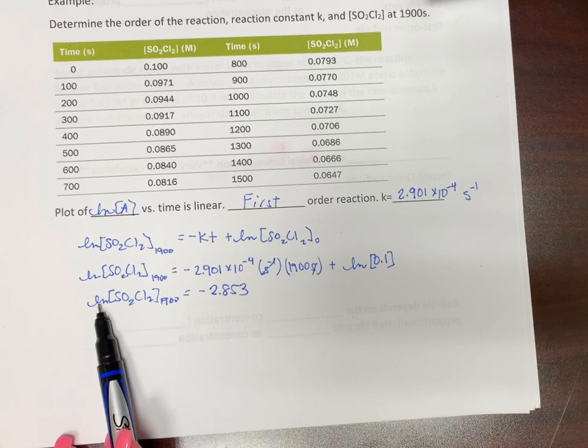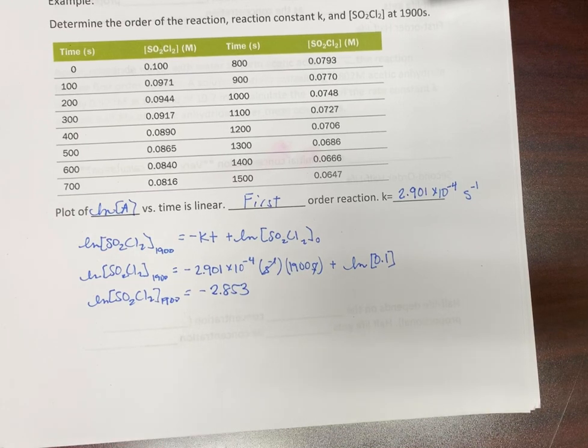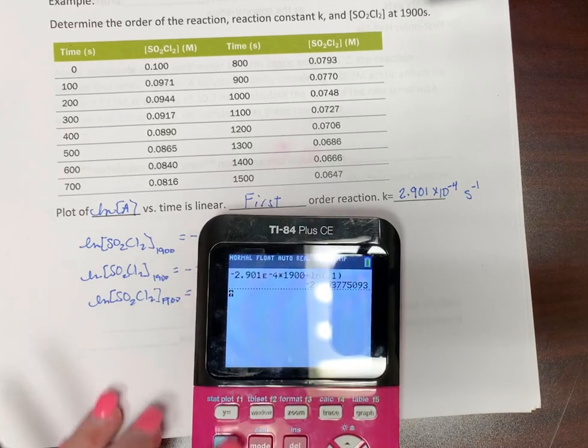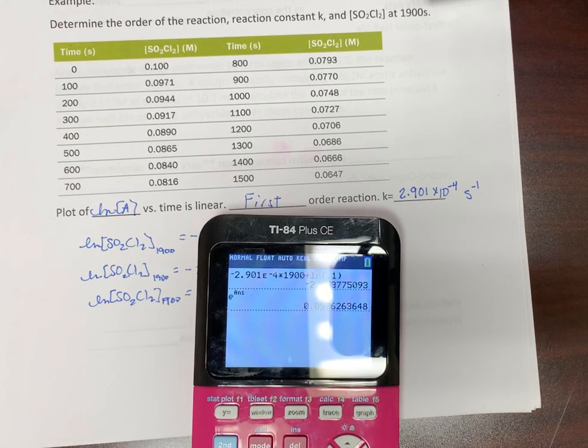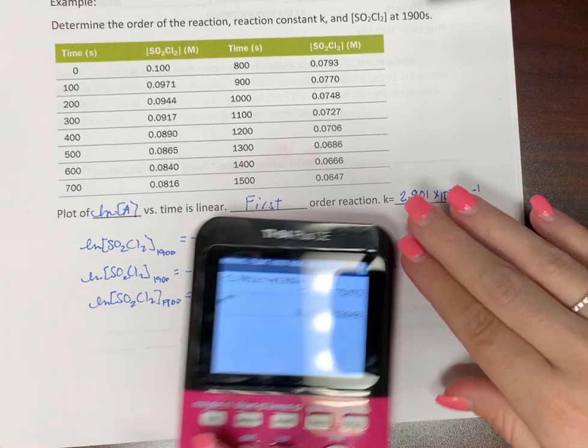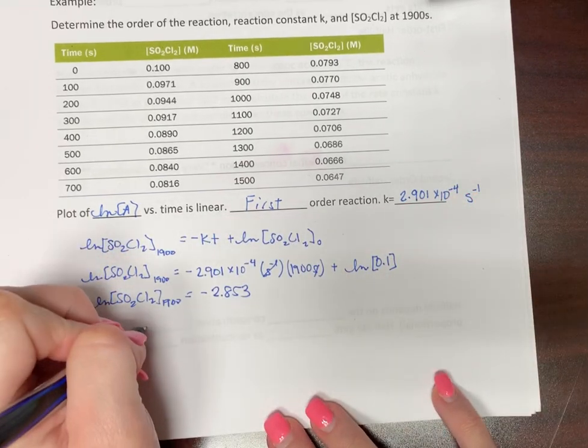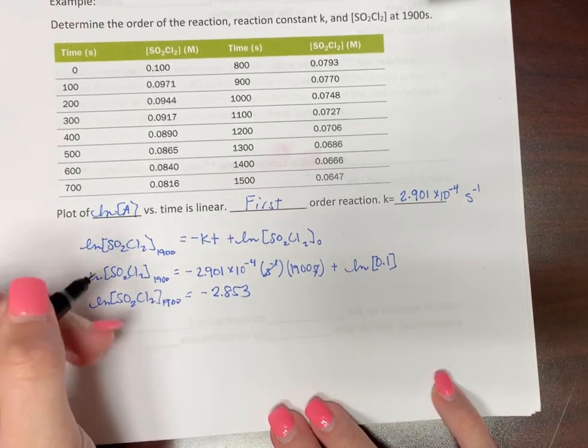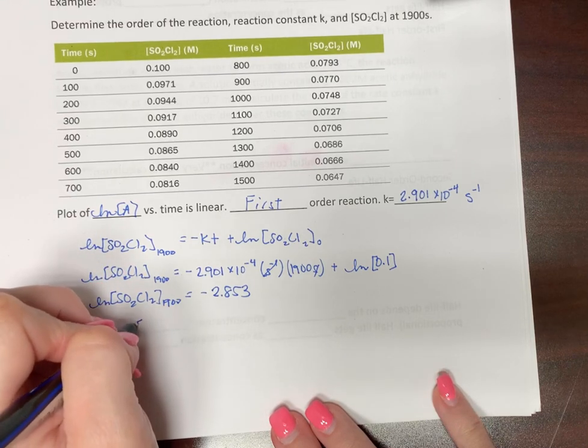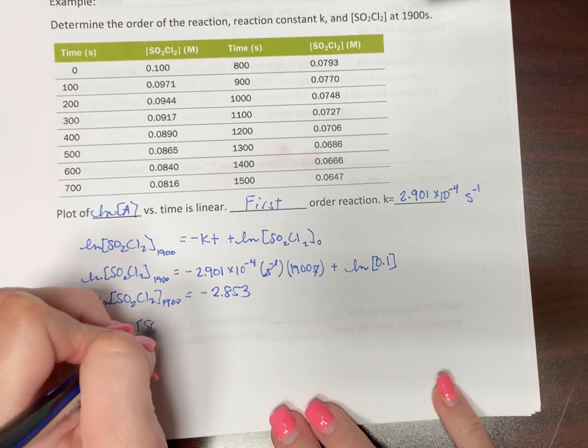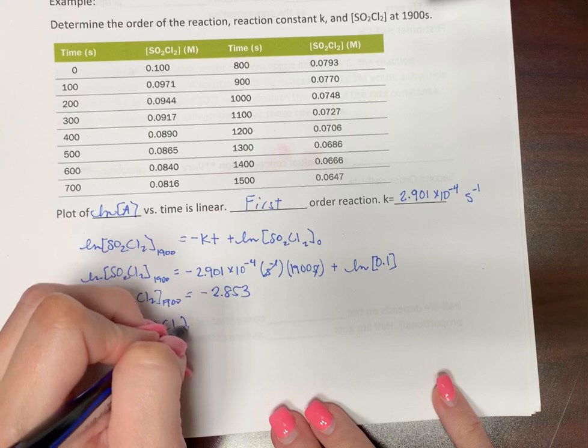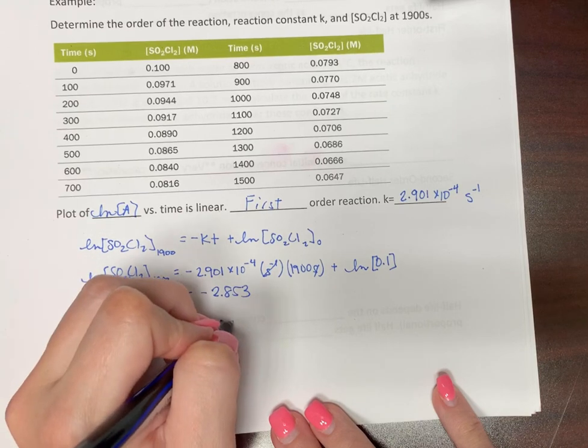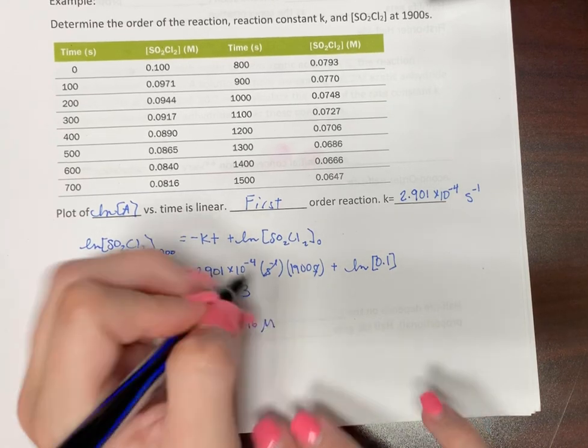Of 1,900 equals negative 2.853. So how do you undo a natural log? You take E to that power. So now we can take E to that power. And there we go. So concentration of SO2Cl2 at 1,900 equals 0.0576 molar.